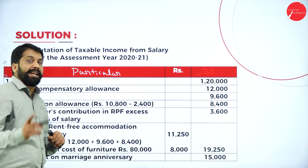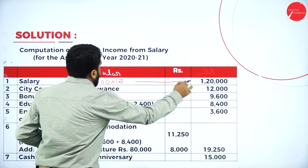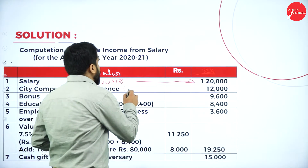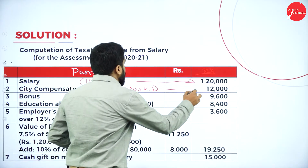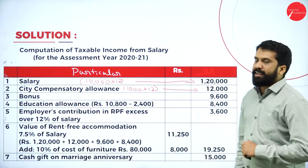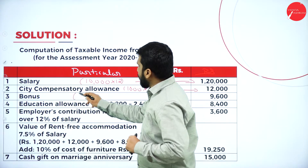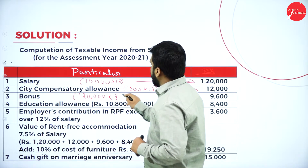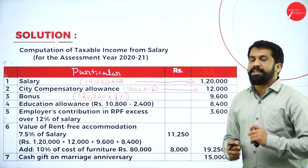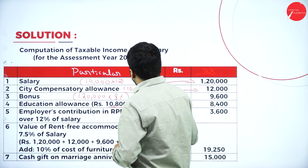Salary part: 10,000 per month multiplied by 12 equals 1,20,000. City Compensation Allowance: 1,000 into 12 equals 12,000. Bonus: 8% of salary — 1,20,000 into 8% equals 9,600. Education allowances: total received is 10,800 (450 into 12 into 2); exemption is 2,400 (100 into 12 into 2); taxable portion is 8,400.